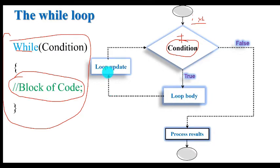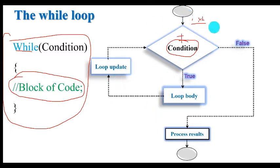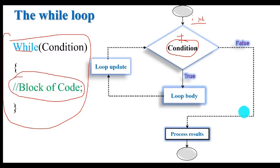Then the loop body is updated. It may be auto-increment or it may be auto-decrement. Within this updated value, the initial or input value is used only one time. After that we take either the auto-increment value or auto-decrement value, then check the condition again. If the condition is true, come back again on this body of the loop and execute it.